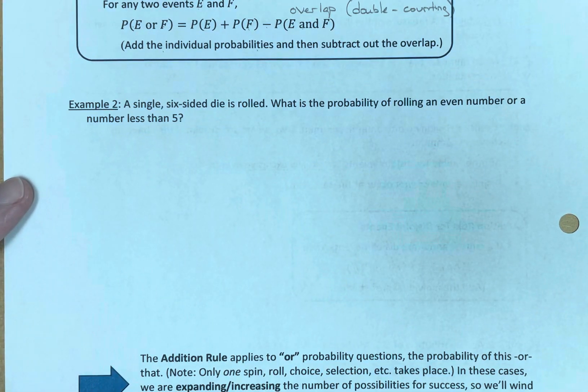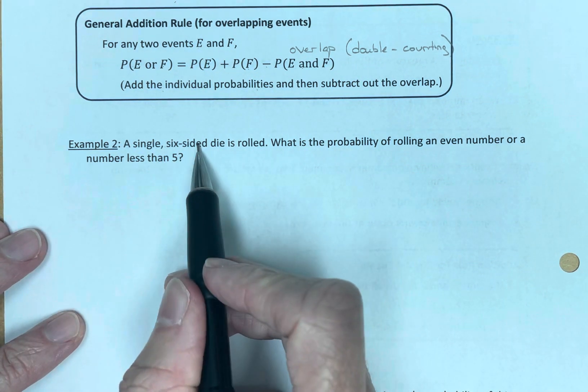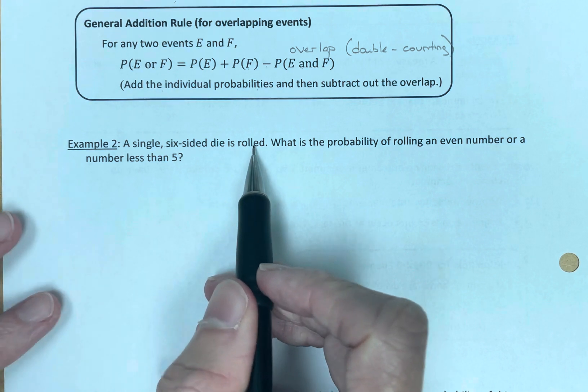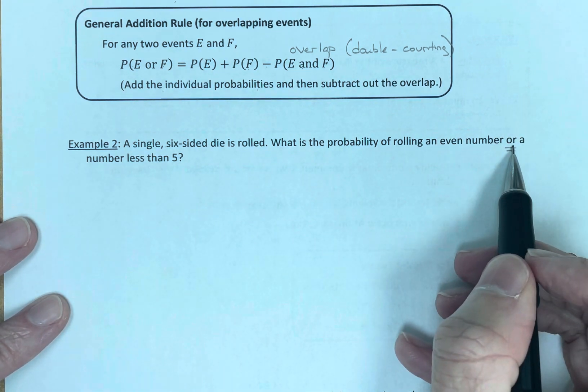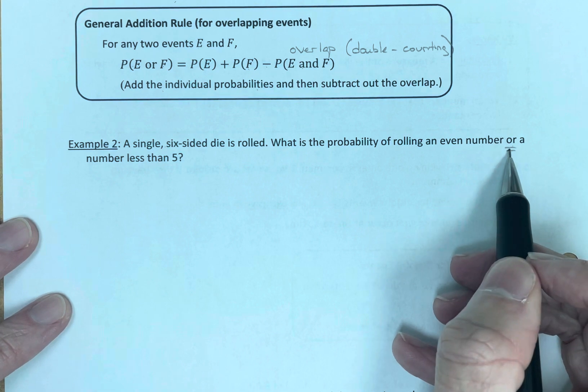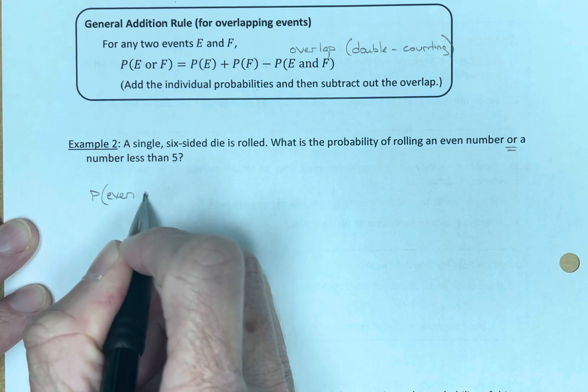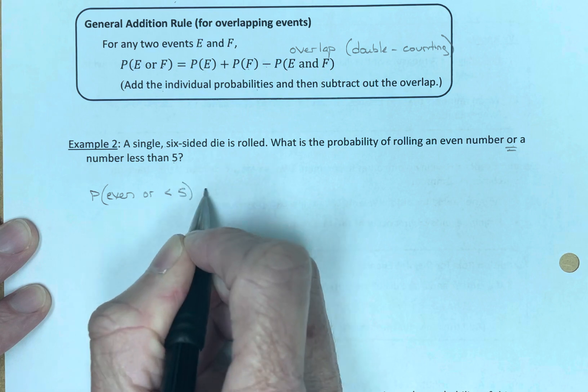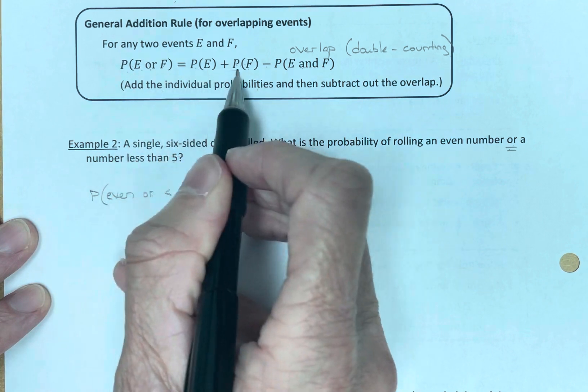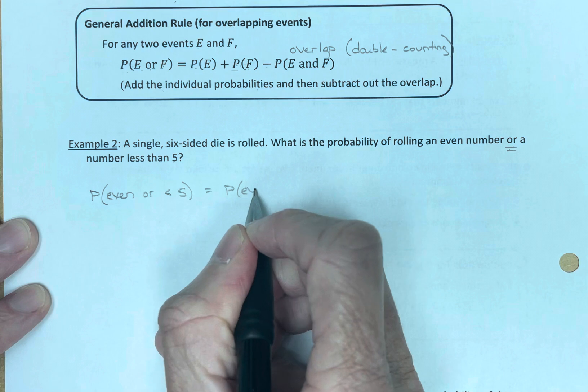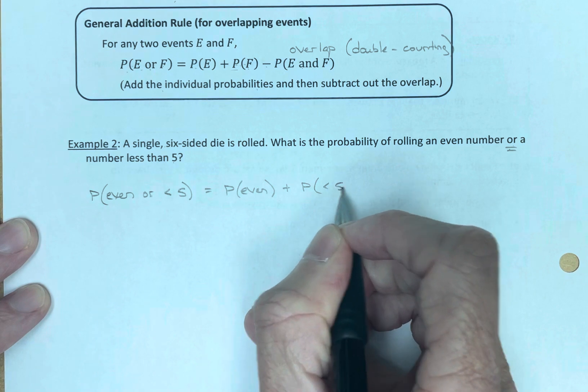Let's take a look at an example of how this works. A single six-sided die is rolled. What is the probability of rolling an even number or—there's that or again—or a number less than five? The probability of an even or less than five. Or is telling us we're going to be adding. An or is a good adding number. We add probability of E or F. We always start with adding. Probability of even plus probability of less than five. Let's take a look.